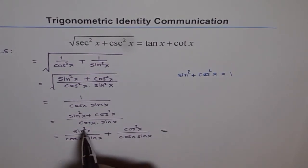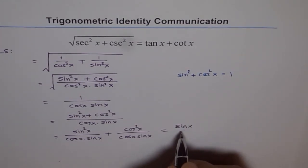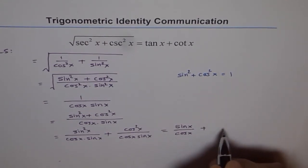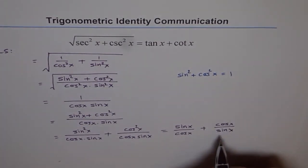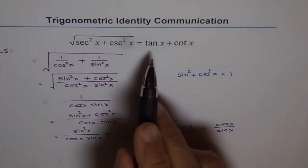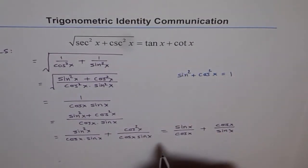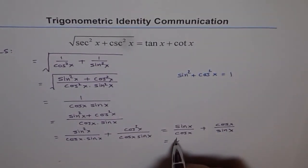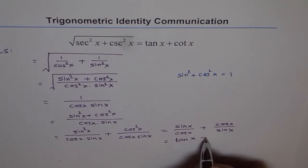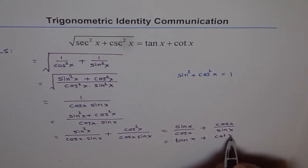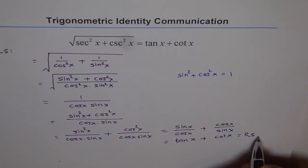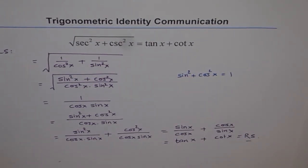Now this is equal to, sin x and sin x will cancel out. So we are left with sin x over cos x plus cos x over sin x. And what is that equal to? That is right hand side, tan x plus cotangent x. Sin over cos is tan. So we get tan x plus cot x, which is our right side. So we proved that left side is equal to right side.